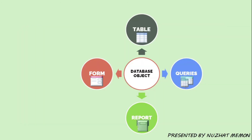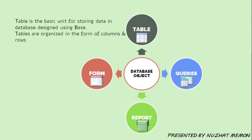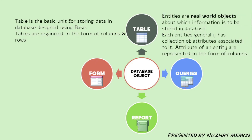There are different database objects. First, a table is the basic unit for storing data in the database designed using Base; tables are organized in the form of columns and rows. Entities are real-world objects — for example, in a railway management system, entities include passengers, trains, timetable, arrival time, and departure time. Each entity generally has a collection of attributes associated with it; attributes of an entity are represented in the form of columns. The number of tables you need depends on how many real-world objects you want to store.